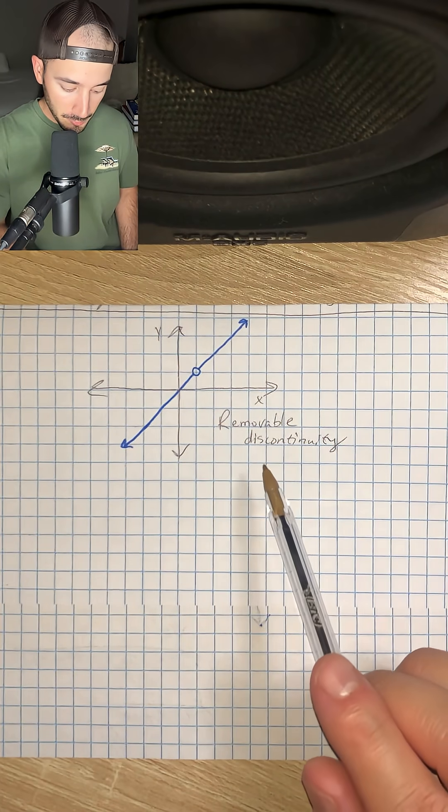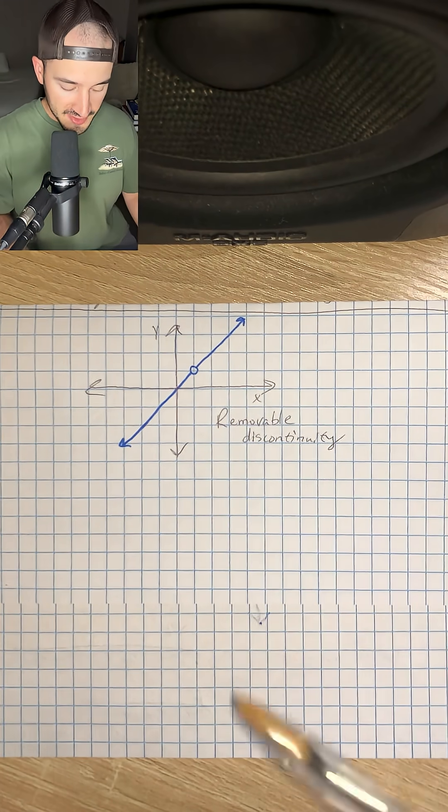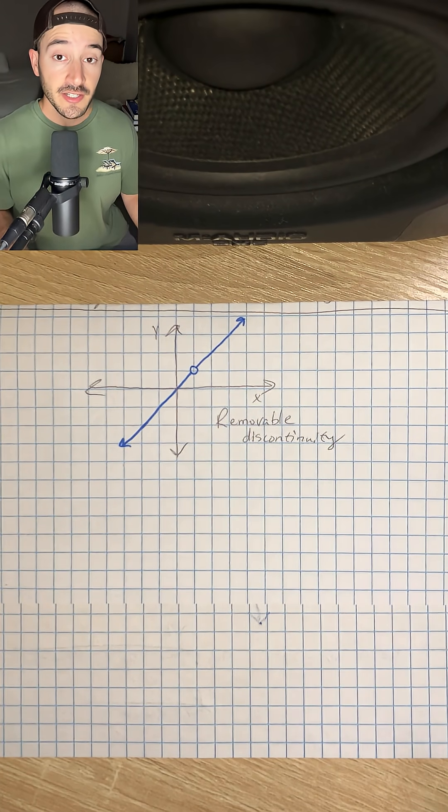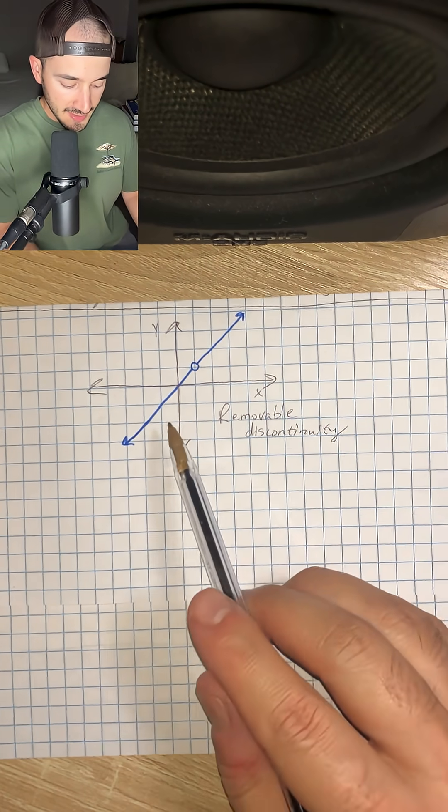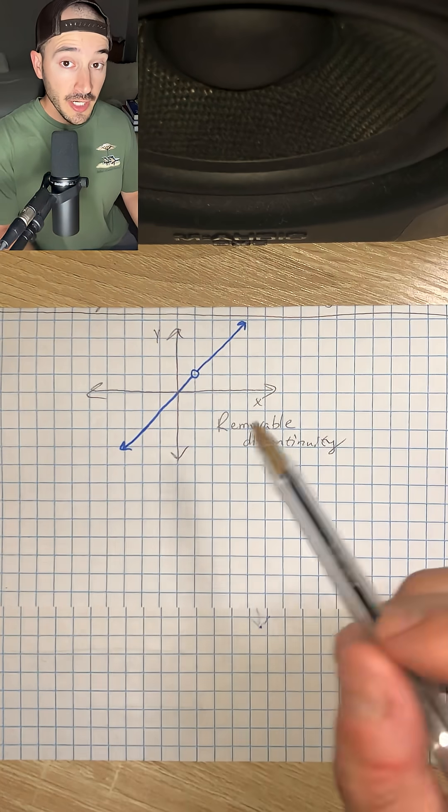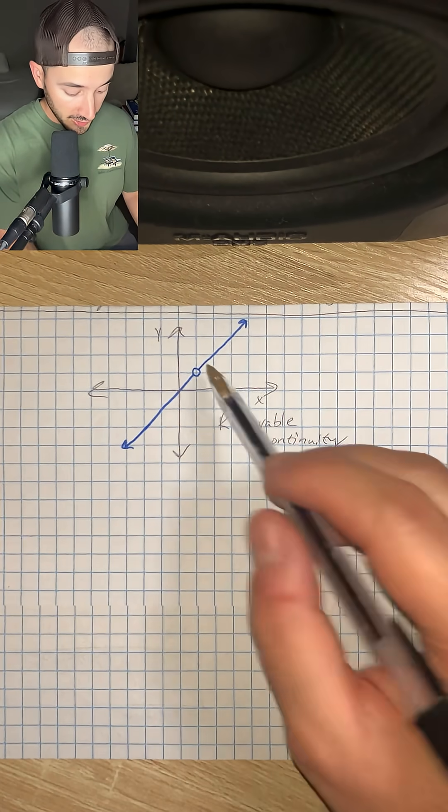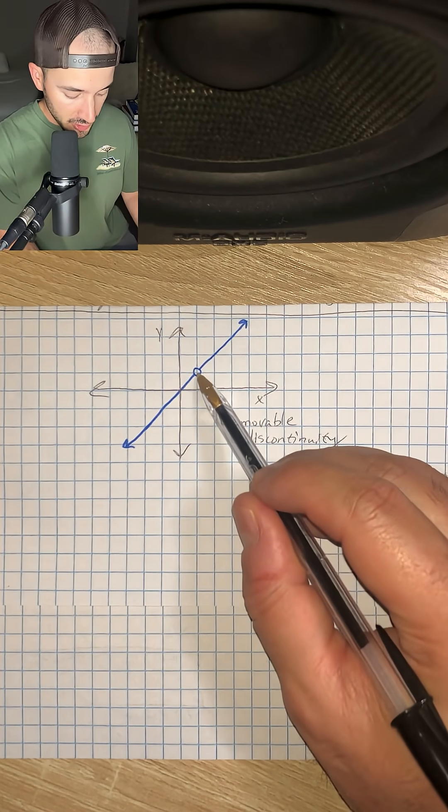Okay, and then the last kind is a removable discontinuity. And so just like it sounds, it's a discontinuity that you could remove very easily. And so that means that the function is continuous everywhere except for one point, in this case, at x equals one.